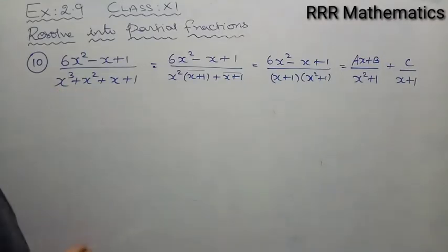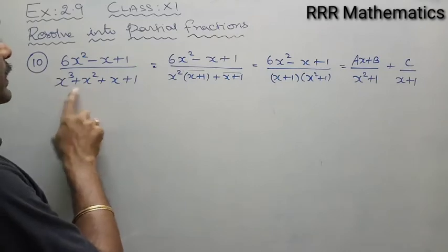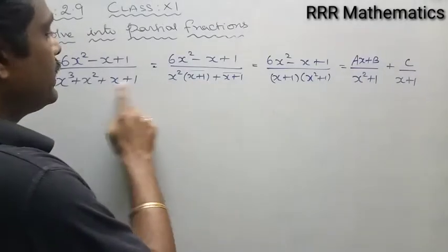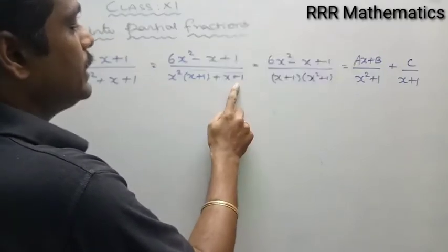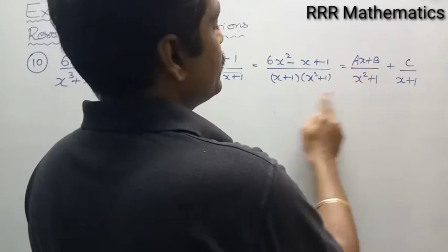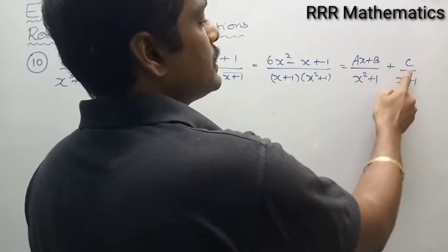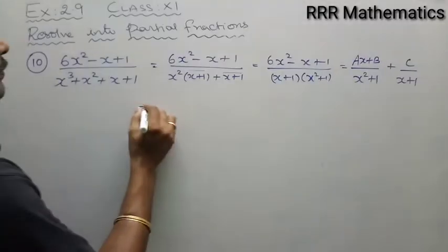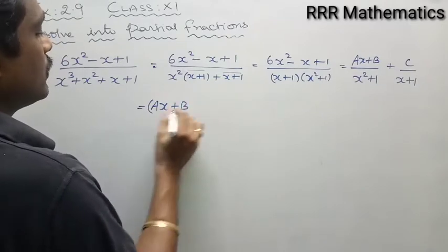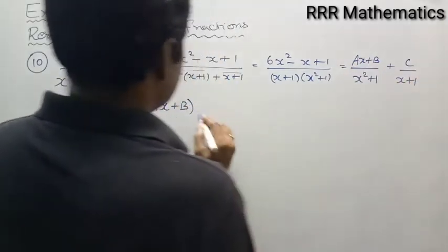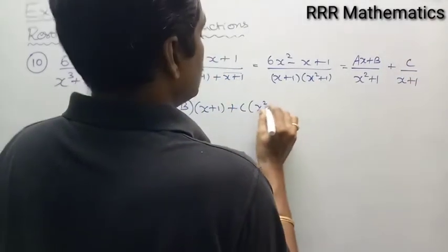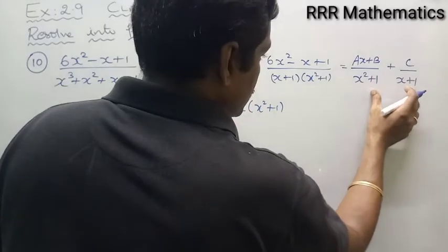First, I factorize the denominator. Between the first two terms I take x² common, giving (x+1) inside the bracket, and again (x+1) outside, so I take (x+1) as common. That gives (x+1)(x²+1). For x²+1 I write ax+b, and for x+1 I write constant c/(x+1). Now taking LCM: it becomes (ax+b)(x+1) plus c(x²+1), all divided by (x+1)(x²+1).